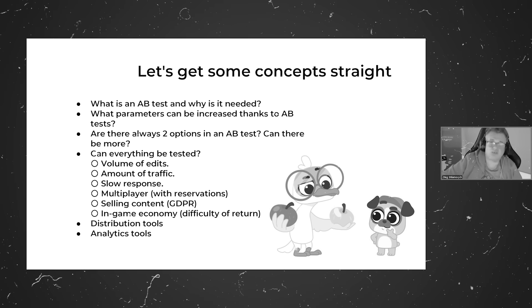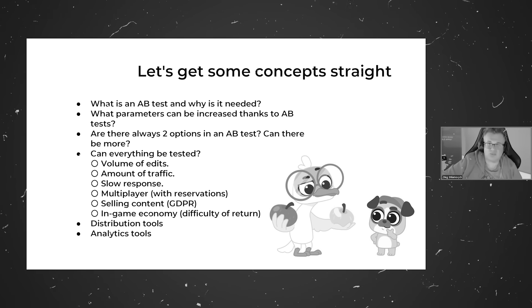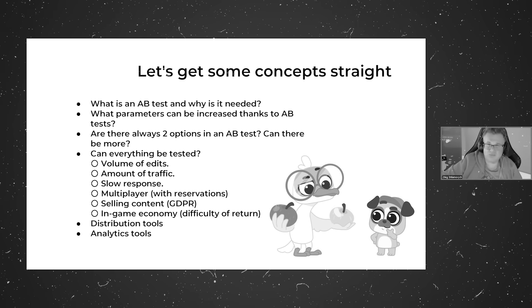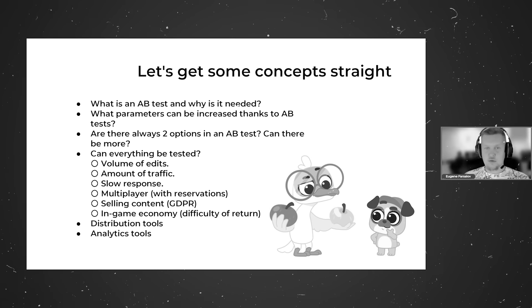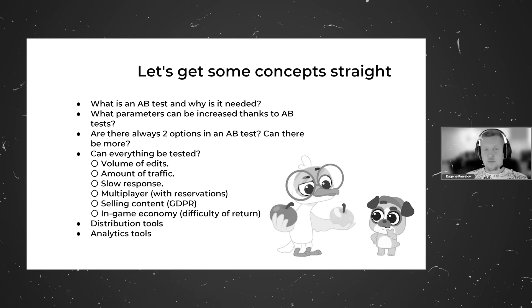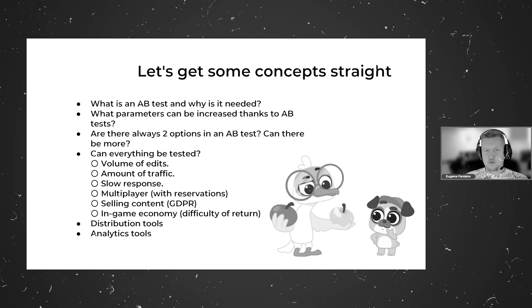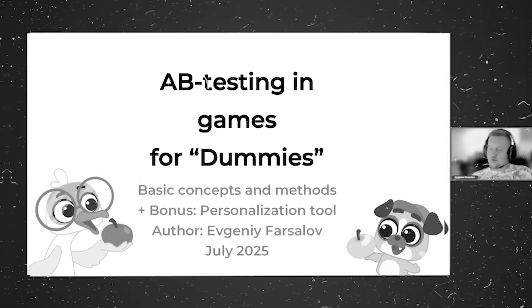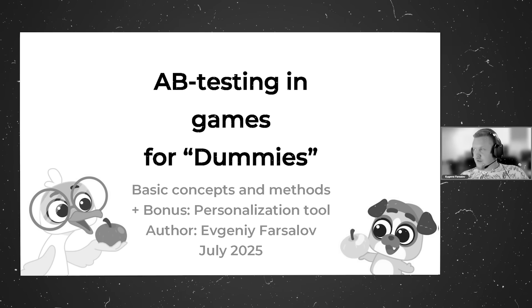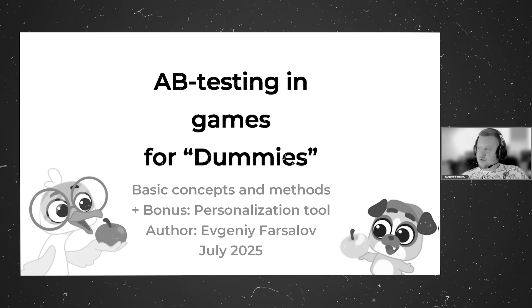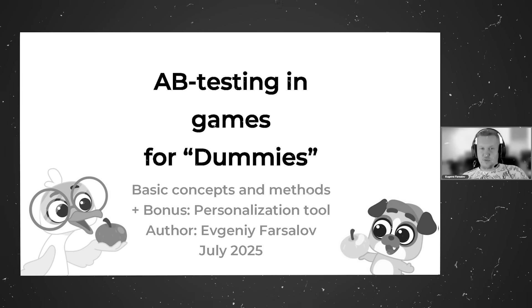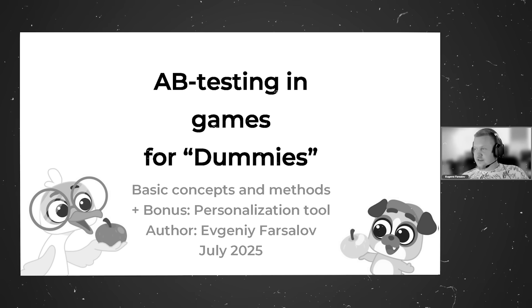A person can simply say, 'This one is definitely better, I've decided, and that's it.' They don't even look. Oleg, have you heard that in the new smart Xiaomi kettles you can run Android apps? And that's what we'll talk about today — A-B testing in games for beginners.